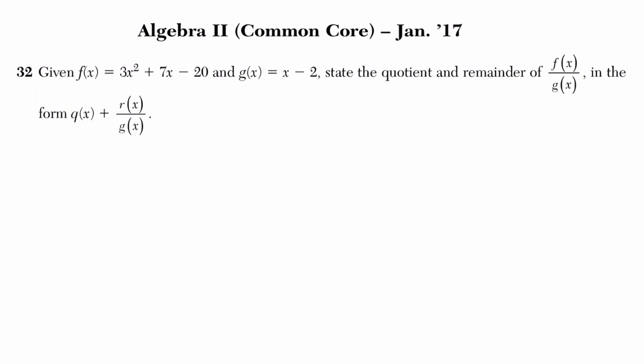What does this mean? This means that you have some quotient q(x), some remainder r(x), and the original function you're dividing by g(x). You want to put your answer in that form.